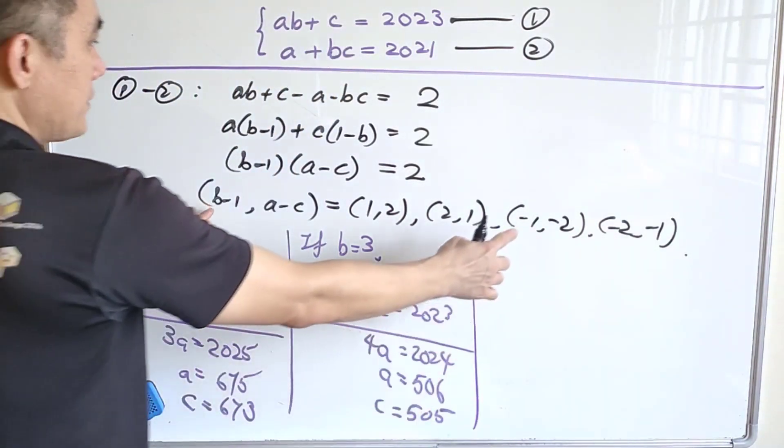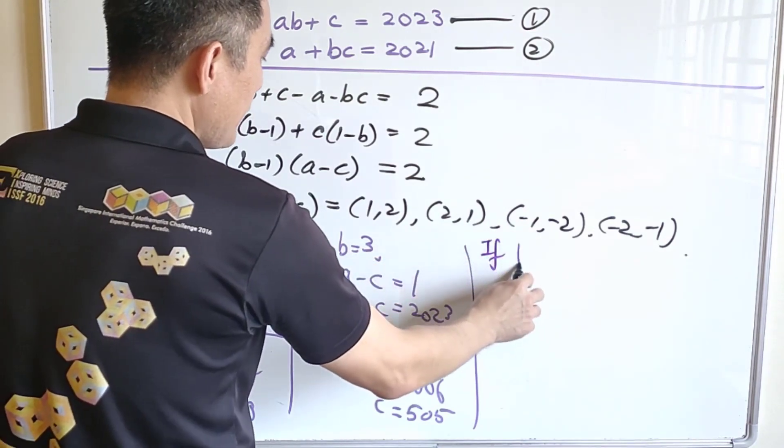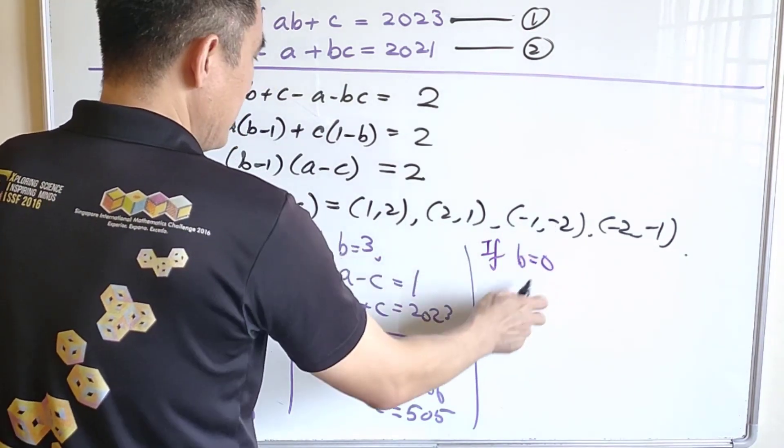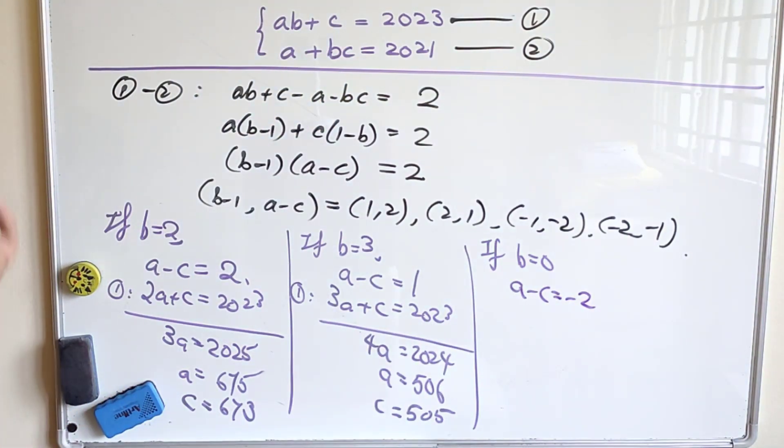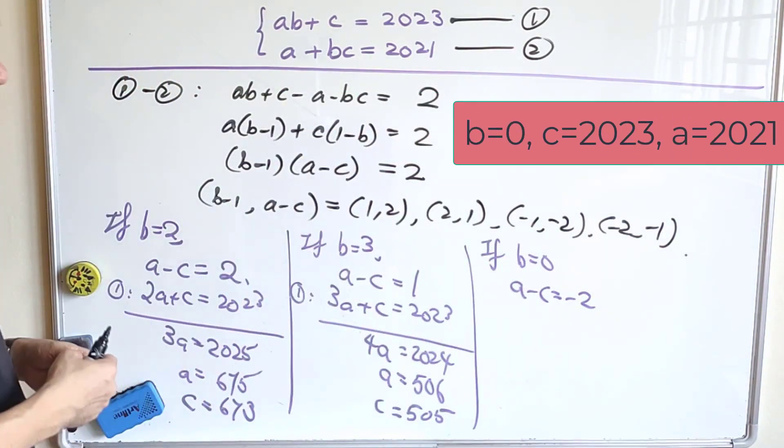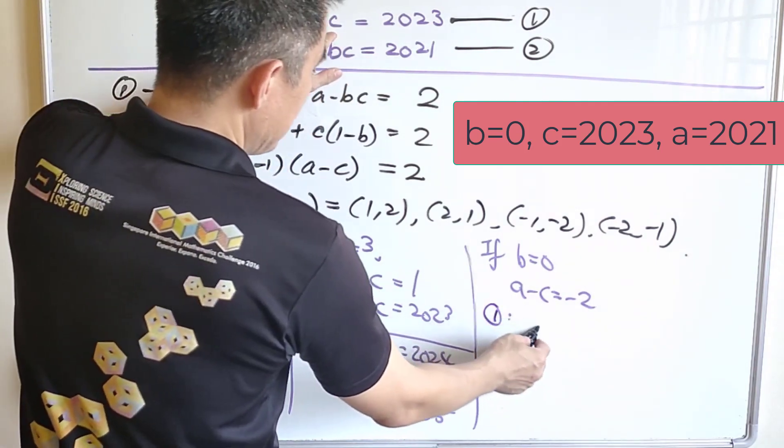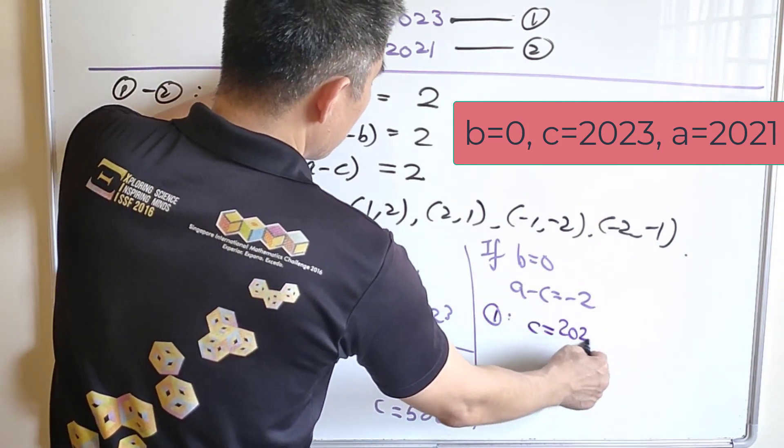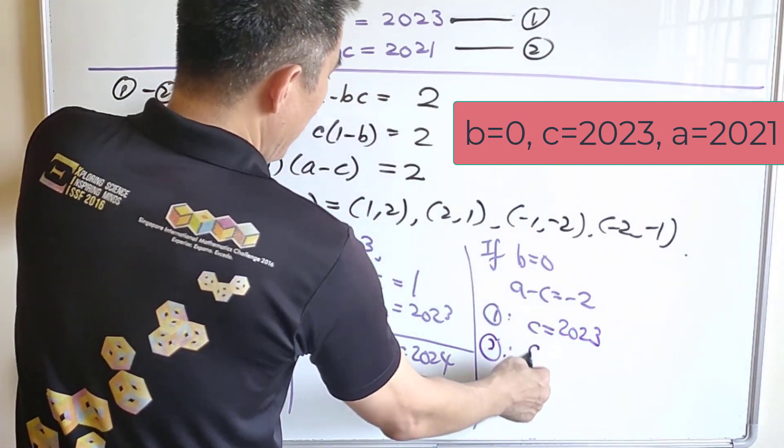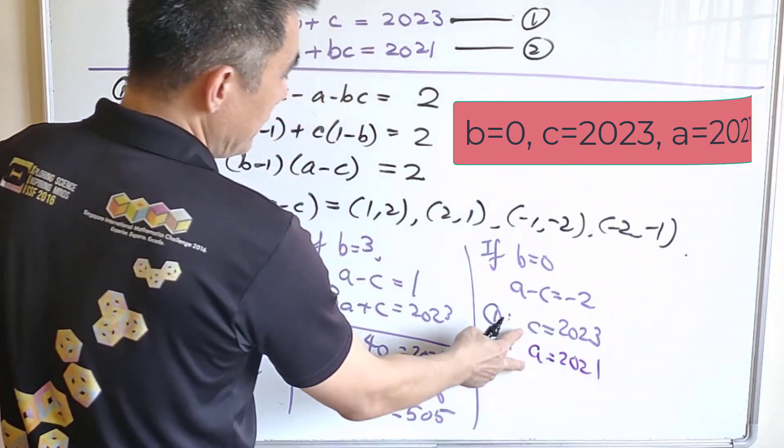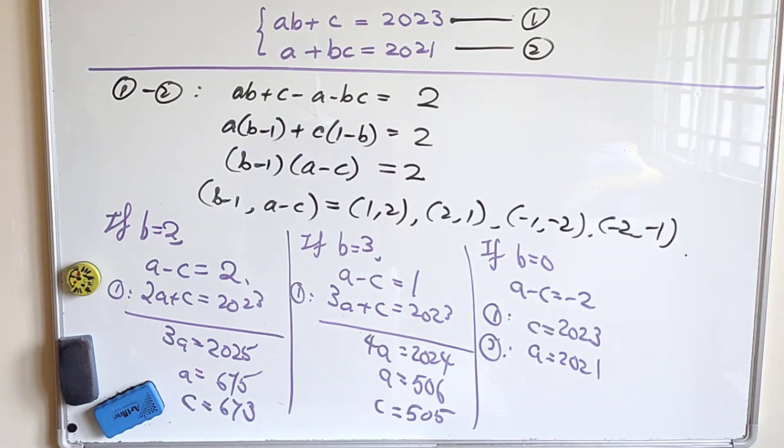Next, we'll consider if B equals to 0. If B equals to 0, A minus C equals to negative 2. And we already discussed this question at the beginning of the video. From equation 1 itself, C is equal to 2023. And from equation 2 itself, A is equal to 2021. And indeed, A minus C equals to negative 2. So this gives us the third solution.